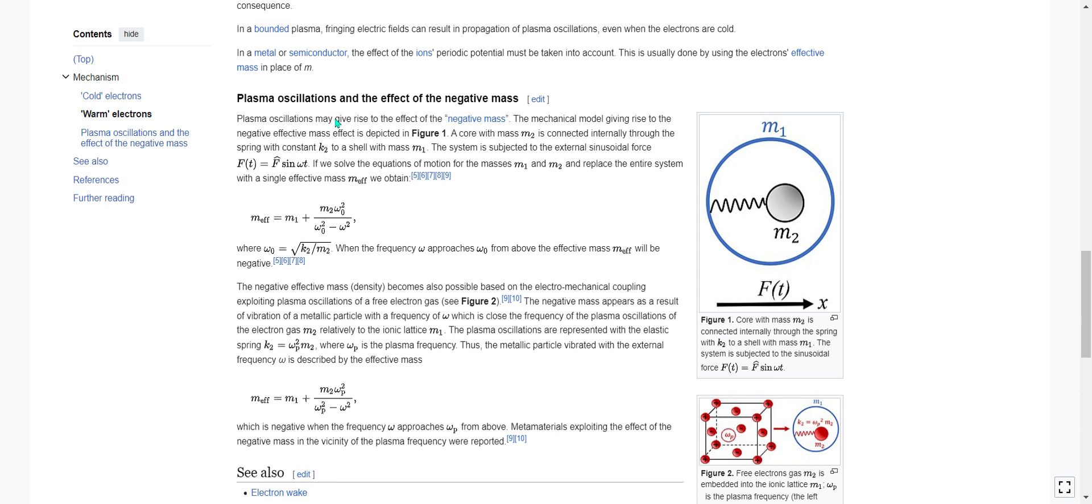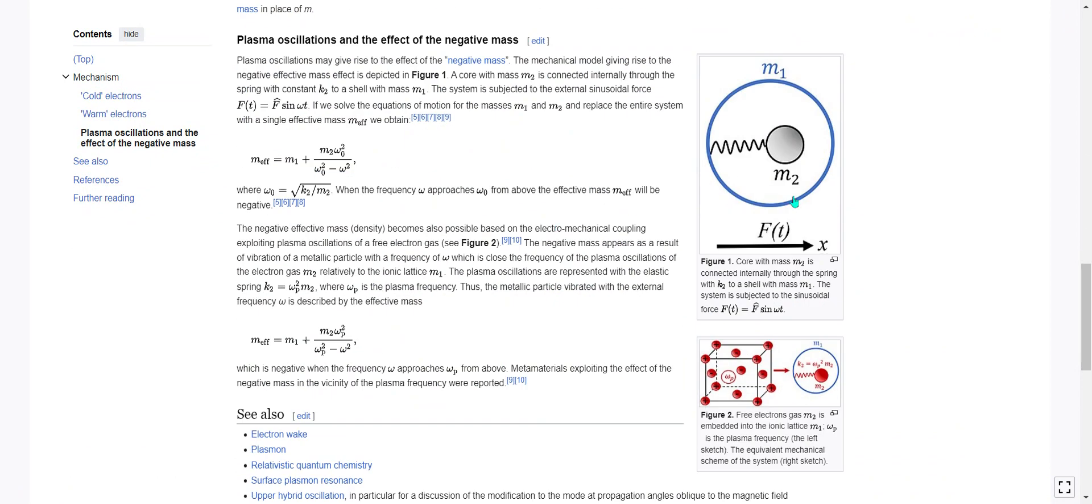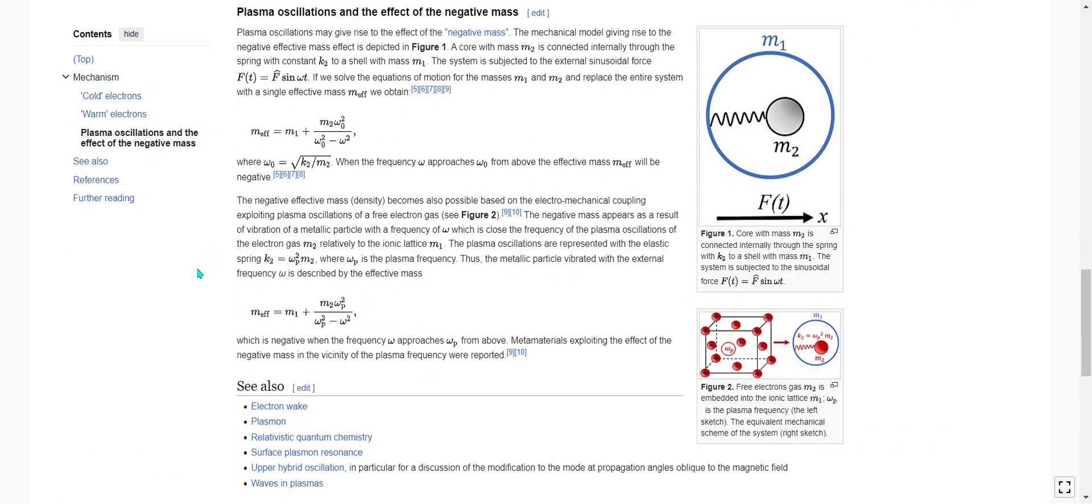A mechanical model giving rise to the negative effective mass is depicted in figure one. A core with mass two is connected internally through a spring with constant k two to a shell mass one. The system is subjected to an external sinusoidal force f of t. The negative effective mass density becomes also possible based on the electromechanical coupling exploiting plasma oscillations of a free electron gas. See figure two.